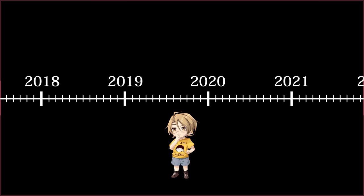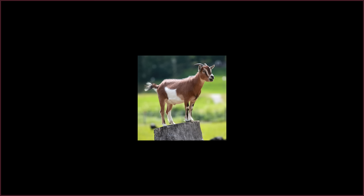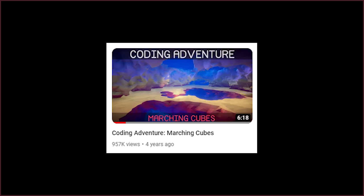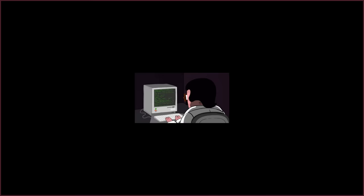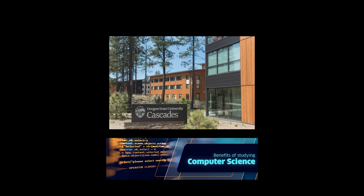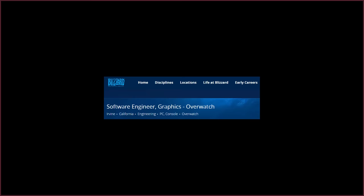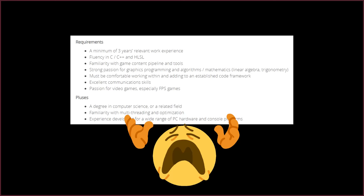Fall rolled around, and it was time for the big bad algorithms class that every computer science student has to take. Our final project required us to choose an algorithm and do a presentation on it. Around this time I discovered Sebastian Lague. I saw his video on marching cubes and it looked like so much fun I chose it for my presentation. I spent an entire weekend implementing the world's worst marching cube script in Unity, which became my first graphics project ever. It was also at this time that I finally realized graphics programmer was even a thing, and just how far away I was from ever achieving that goal.